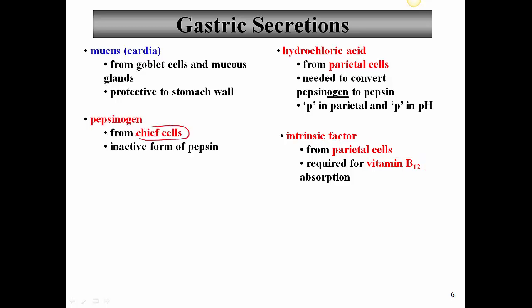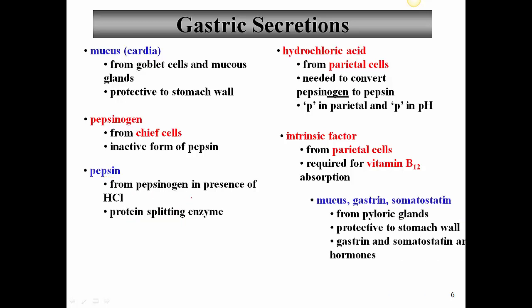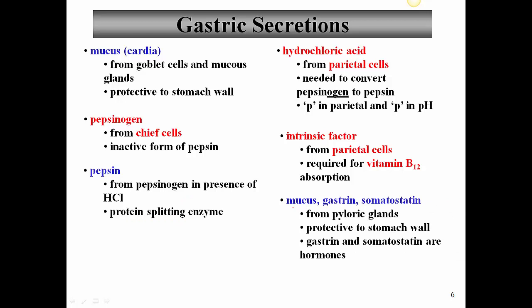Another set of cells in the gastric glands are the chief cells. These cells secrete an inactive enzyme known as pepsinogen, and because we're breaking peptide bonds, pepsin is a type of enzyme that breaks down proteins. The chief cells secrete pepsinogen, and that pepsinogen is then broken down by the hydrochloric acid from parietal cells into pepsin, which is very important in beginning protein digestion. We also have cells that secrete gastrin — G cells — and cells that secrete somatostatin — D cells.